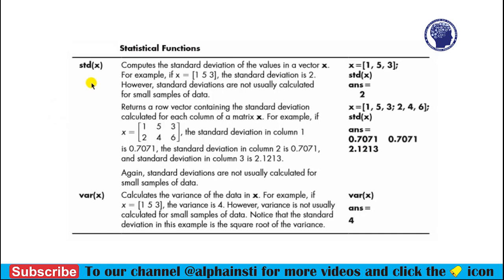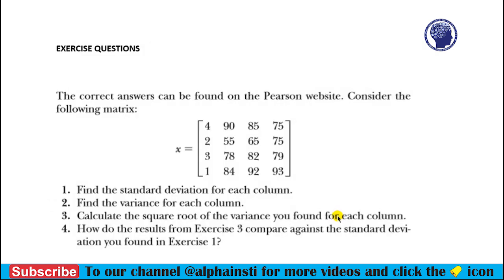Here we have the statistical functions. The first one is standard deviation — here we have calculated the standard deviation of vector x. Similarly, you can find the standard deviation of a matrix, and it calculates the standard deviation of each column, giving three answers for three columns. The second one is variance, and you can calculate the variance of the whole vector or any matrix. These are the exercise questions related to standard deviation and variance.